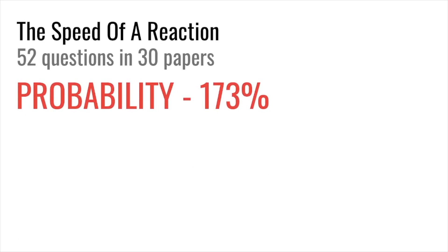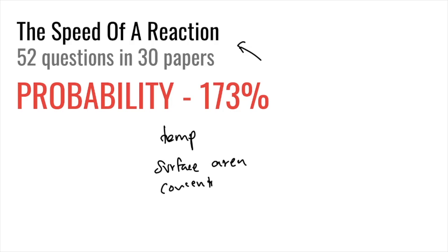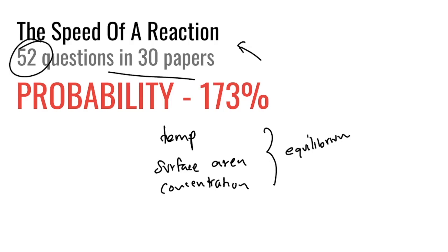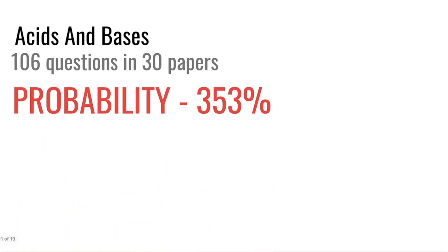Speed of reaction has 52 questions in 30 papers — nearly two questions per paper — with a probability of 173%. Questions cover how temperature, surface area, and concentration affect the rate of reaction. They could also ask about equilibrium: if you increase temperature, what happens to the position of equilibrium?